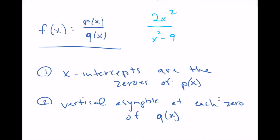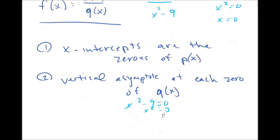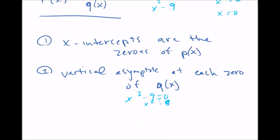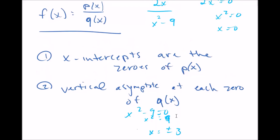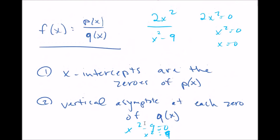Let's look at another example: 2x squared over x squared minus 9. The x-intercepts are the zeros of p of x, so we set the top equal to zero: 2x squared equals zero, x equals zero. There's one x-intercept at zero. For the vertical asymptote, we set the bottom equal to zero: x squared minus 9 equals zero, x squared equals 9, x equals plus or minus 3. There are two vertical asymptotes, at plus 3 and minus 3.